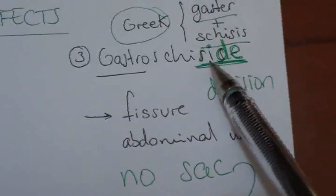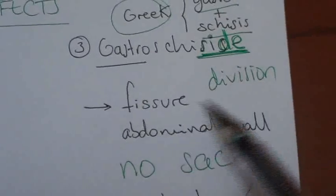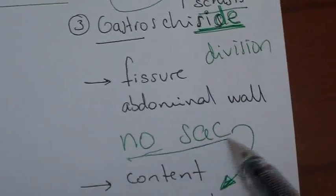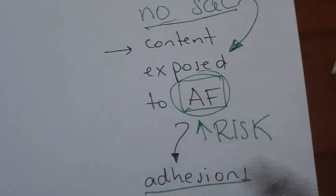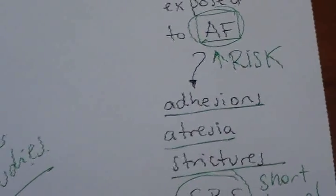Again, gastroschisis is in the side. It's not in the center like omphalocele. It doesn't have a sack. So that's why the content is exposed to abdominal fluid, which increases the risk for adhesions, atresia and strictures.